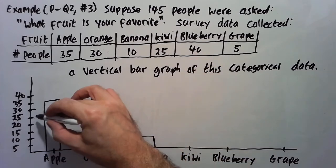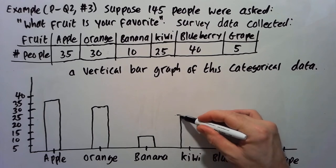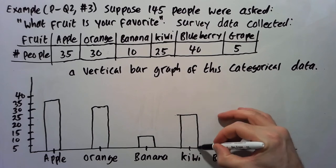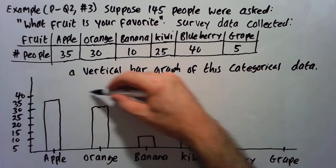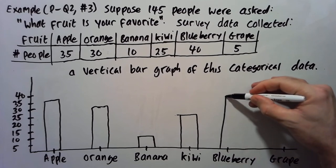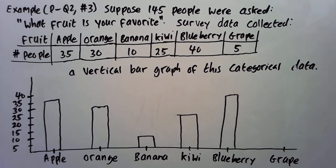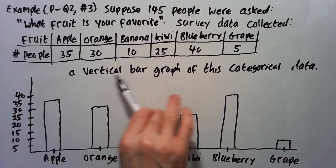Okay, kiwi has 25. So 25 is up there. Now blueberry's 40. So blueberry's 40 up here. And lastly, grape is 5. So 5 is way down here. Okay, so this would be our bar graph for this categorical data. And this is a vertical bar graph.